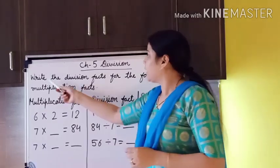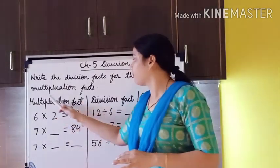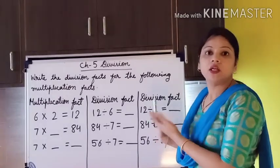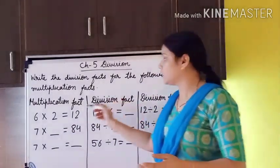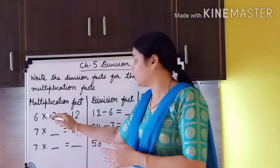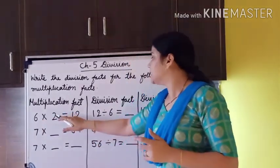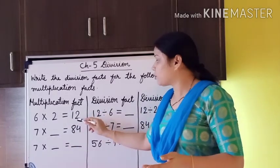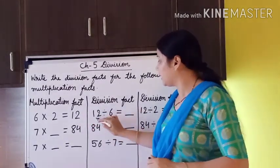Here I have written a question: write the division facts for the following multiplication facts. I have made three columns — the first column has the multiplication facts, the second column has one division fact, and the third column has the second division fact. Some blanks are given. The first one: 6 multiplied by 2 is equal to 12 — this is the complete multiplication fact. We have to change it to division facts. The product 12 will become the dividend, and here it is already written as 12.